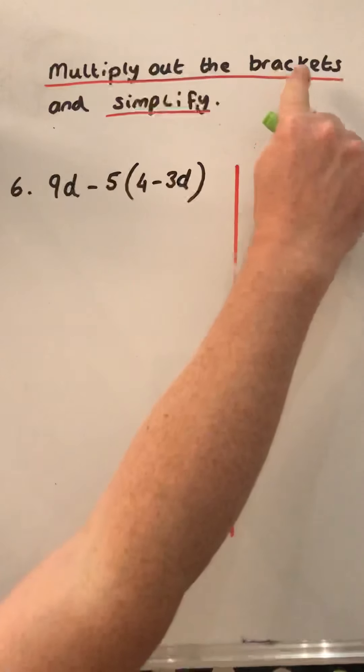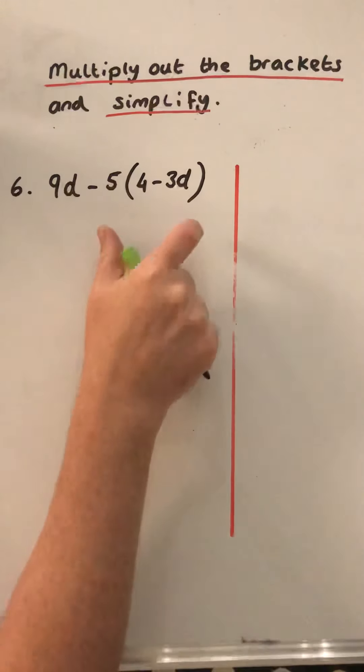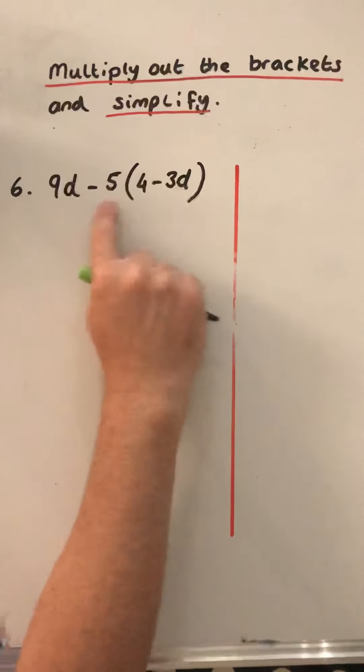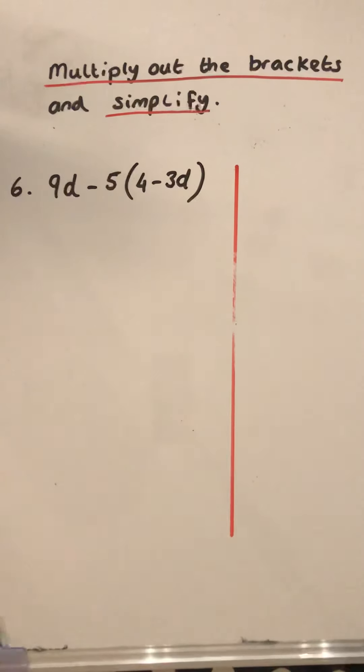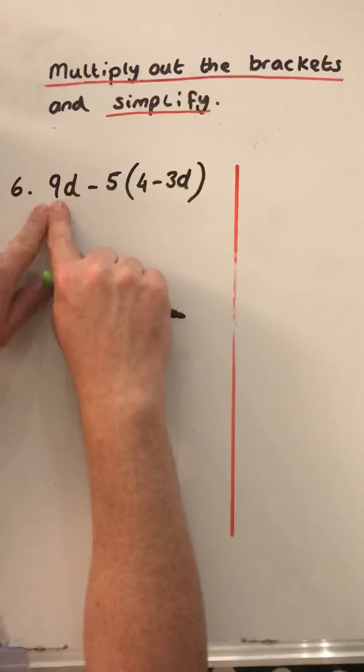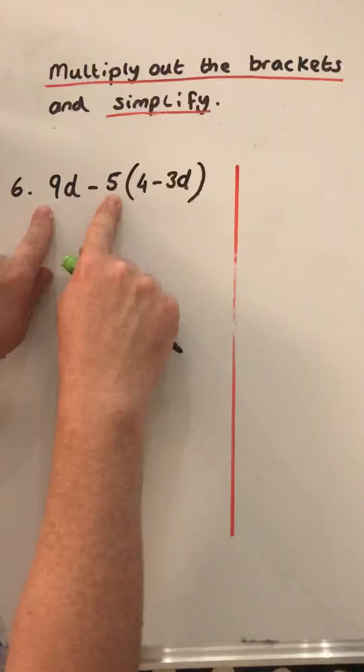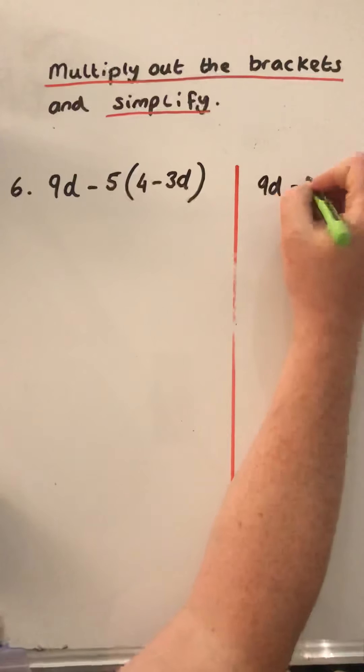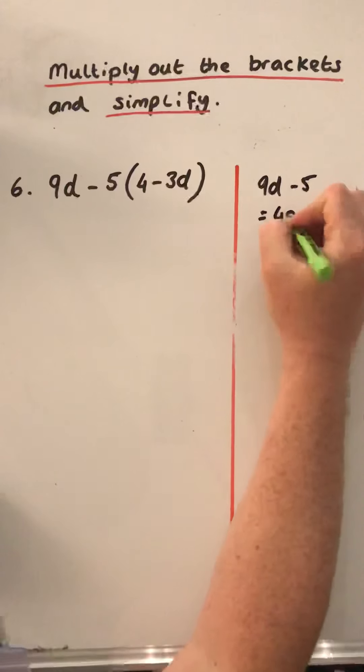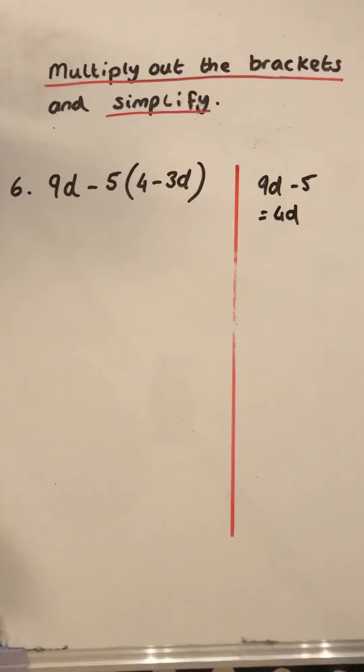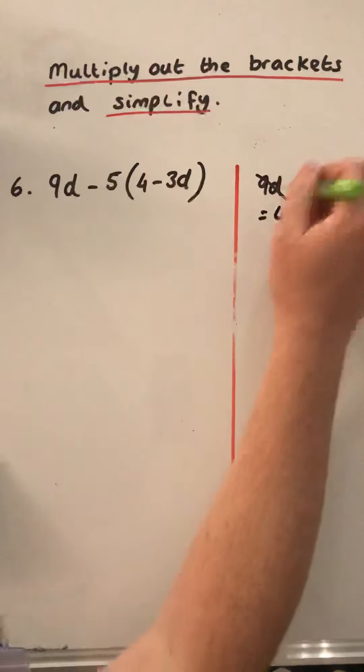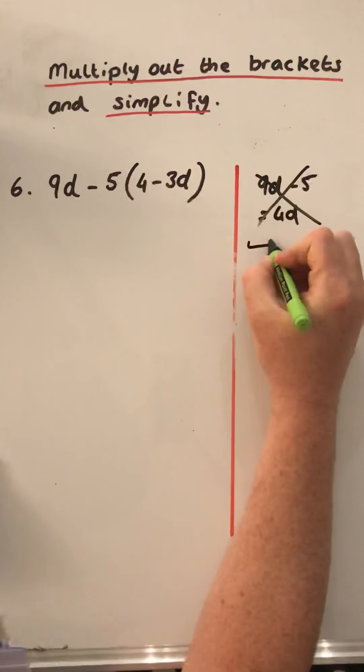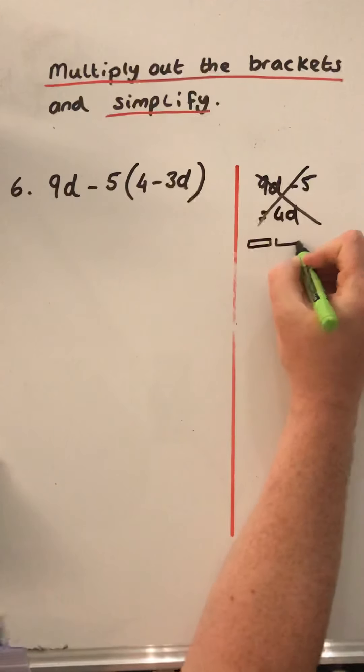We have to multiply out the brackets. That takes precedence over the addition and subtraction. But even if you thought that you could do 9d minus 5, the misconception there is that some people think that's 4d. But that is not the case. Let's always represent these variables as a bar.